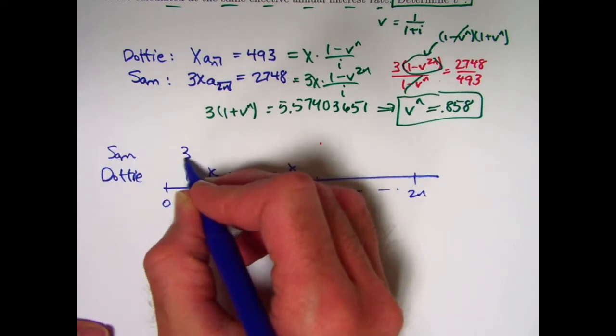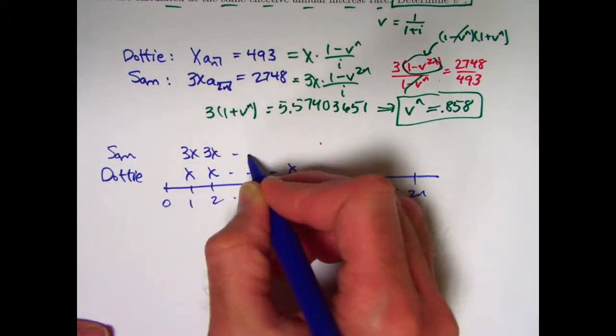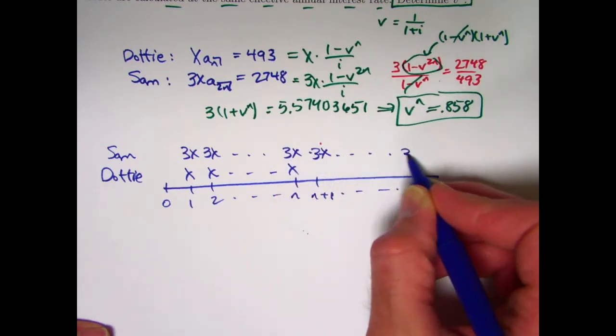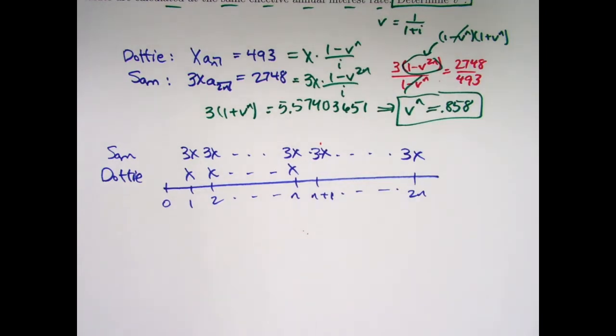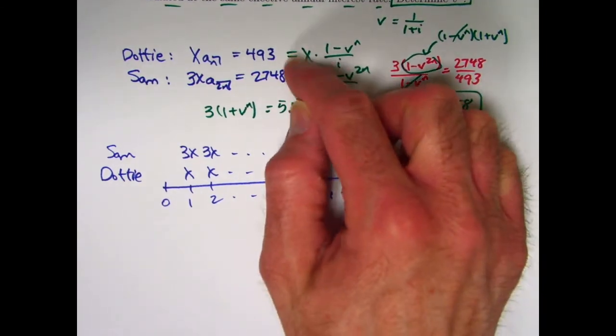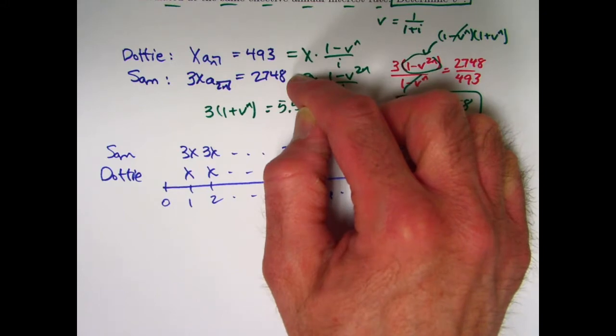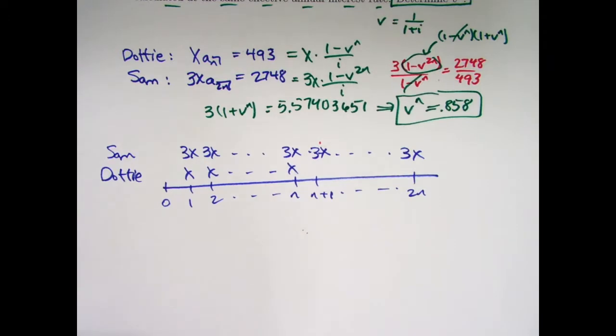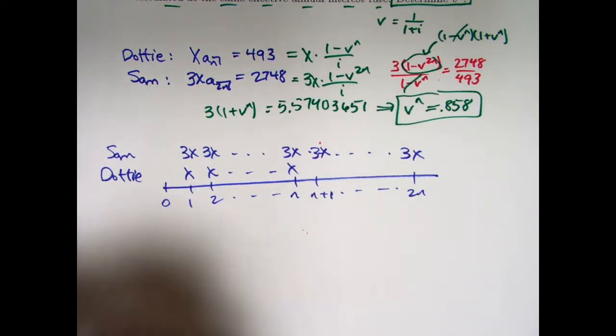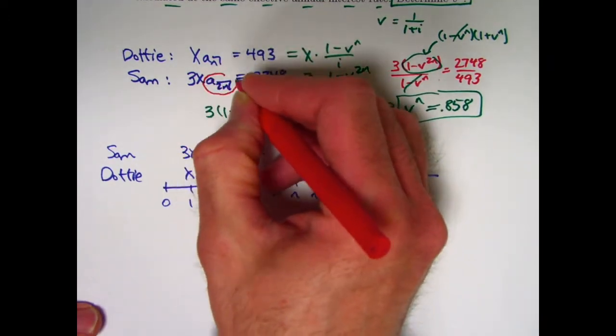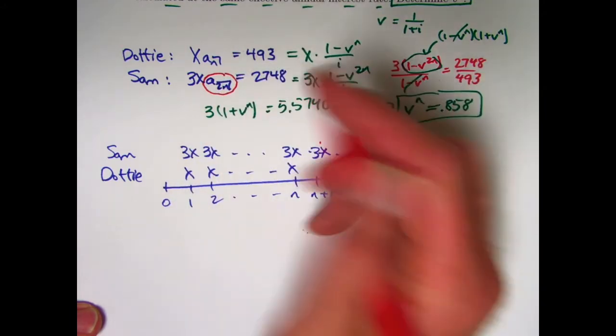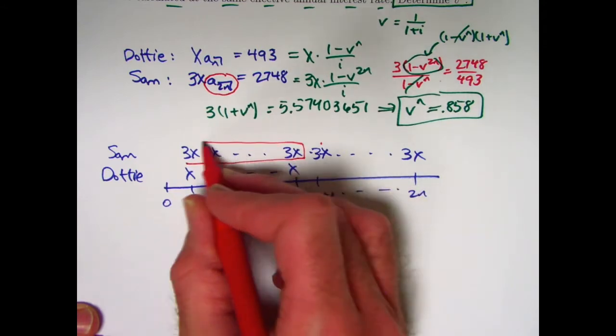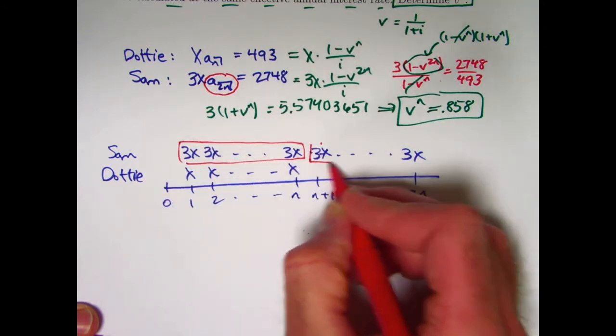Sam has payments of 3x at the end of each year for 2n years. Like that. So we still have the same given information, but I'd like to solve for v to the n without using these formulas here. What's going to be helpful, and this is what you want to get used to, is to be able to break a 2n down in terms of a n by taking Sam's payments and breaking them into two parts, the first n payments and the second n payments.